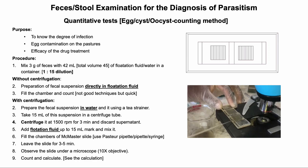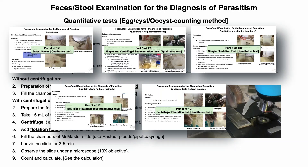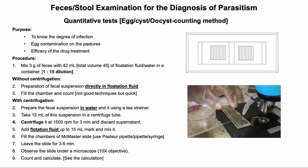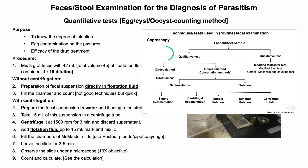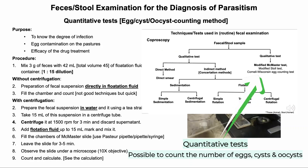In the last few sessions of this video lecture, I discussed how to perform qualitative tests such as direct smear, sedimentation, and flotation tests. In qualitative tests, only the presence or absence of eggs of ailments and cysts and oocysts of protozoa is known. In quantitative tests, it is possible to count the eggs, cysts, and oocysts.